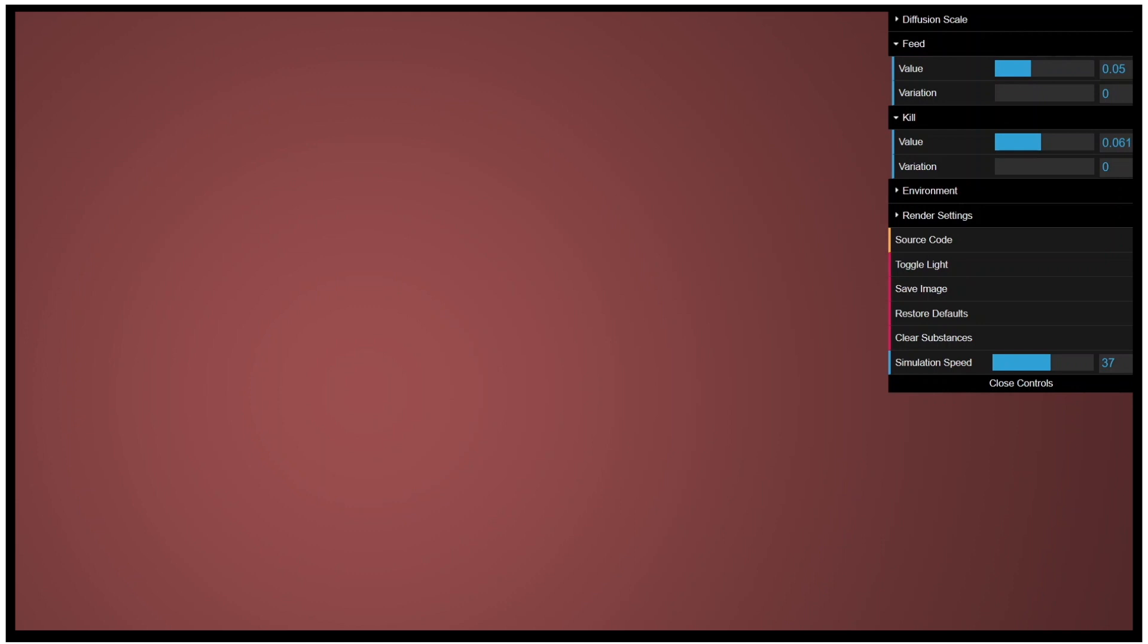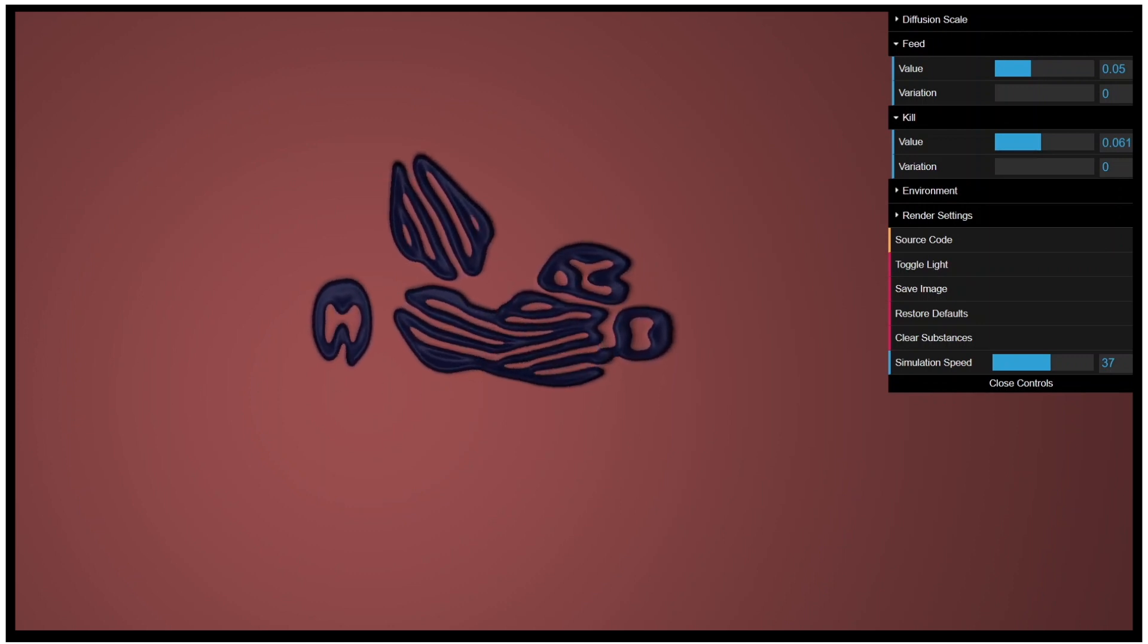So, we have two substances, the red one, which is the one which is created, and the blue one which is dying. Here we can change the feeding and the killing rate of these two substances. At the beginning we only have the red substance. Let's look what happens if we add the blue one. Because of the reaction and diffusion of these two substances, we get a pattern, a Turing pattern.